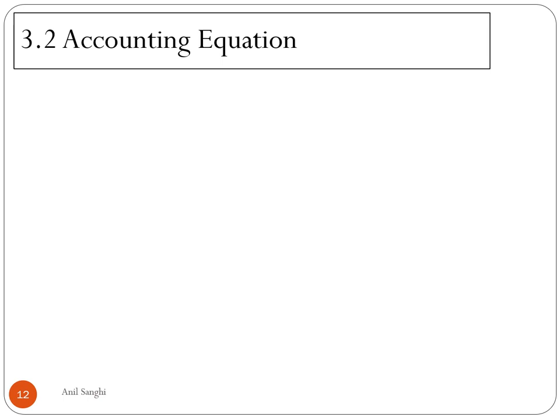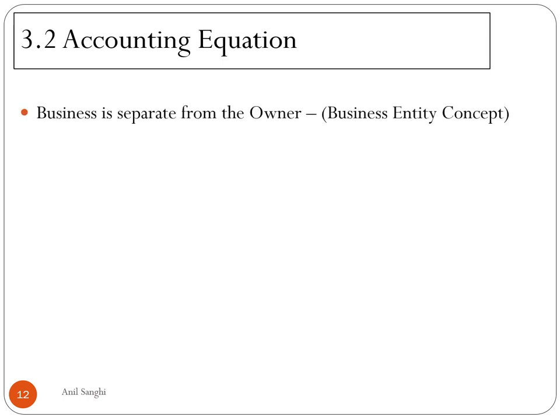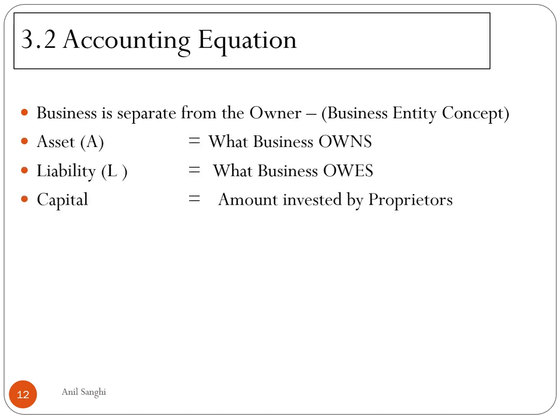This brings us to our next important topic: the accounting equation. Before we go into the concept, let us revisit the business entity concept from our previous video. As per the business entity concept, a business is separate from the owner or proprietor. It has its own assets, its own liabilities, and capital. An asset is something the business owns; a liability is something the business owes to outsiders; and capital is the amount the proprietor has invested in the business.